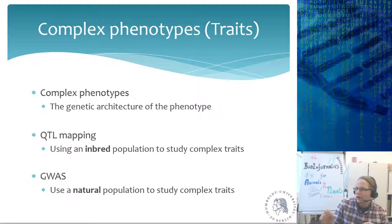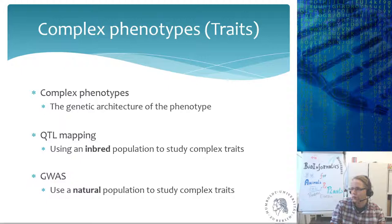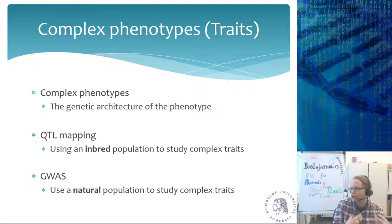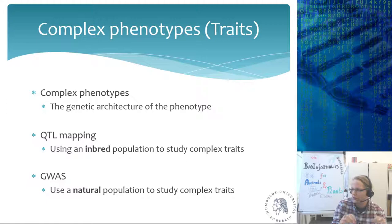A genome-wide association study (GWAS) has the same goal as QTL mapping — find genes contributing to a complex trait — but uses a natural population. For example, with humans we cannot decide who reproduces with whom, so we work with what we have. We cannot set up controlled experiments in humans. So when forced to use a natural population, we do a GWAS. QTL mapping is based on Mendel and Morgan's theory using a structured inbred population, while GWAS uses a natural population where you have no influence on genetics.